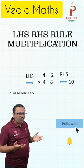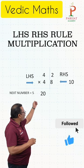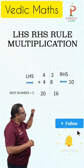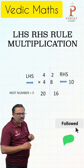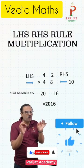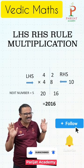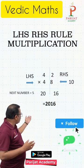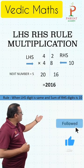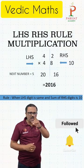4 times 5 becomes 20. Then multiply 2 times 8 — because the addition is 10 — so 2 times 8 is 16. Our answer becomes 2016. It's so simple, just by observing the left-hand and right-hand side combinations. The rule is: when the LHS digit is the same and the sum of the RHS digits is 10, then only we can solve this type of multiplication.